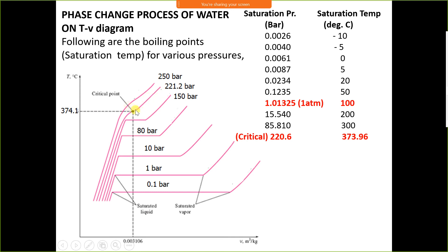Above the critical condition, the water and vapour phases coexist. The lower portion of the dome represents water and the upper portion represents vapour. Water directly converts into vapour without boiling at this condition. As pressure decreases, the amount of latent heat supplied increases.